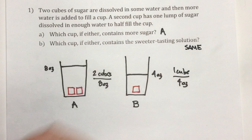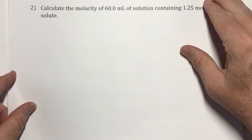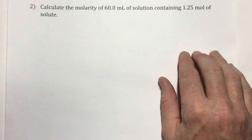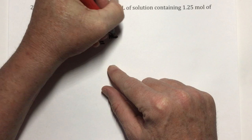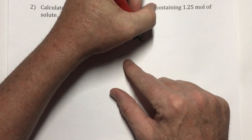There's your first taste of molarity and dilution. Question two: calculate the molarity of a 60.0 milliliter solution containing 1.25 moles of solute. As you no doubt recall, molarity (capital M) is equal to moles of solute divided by liters of solvent.